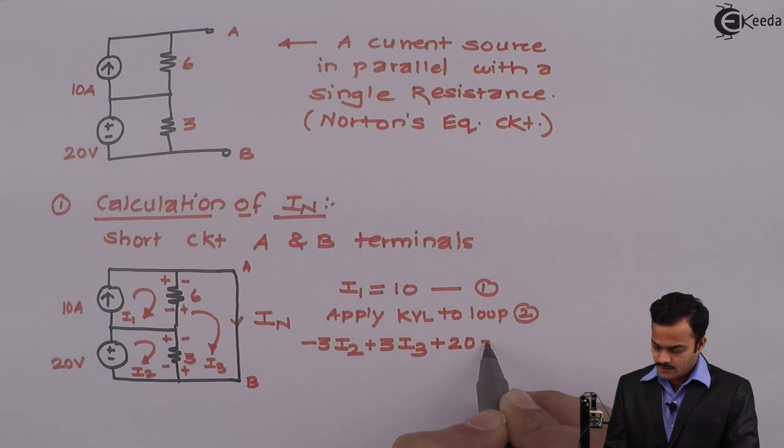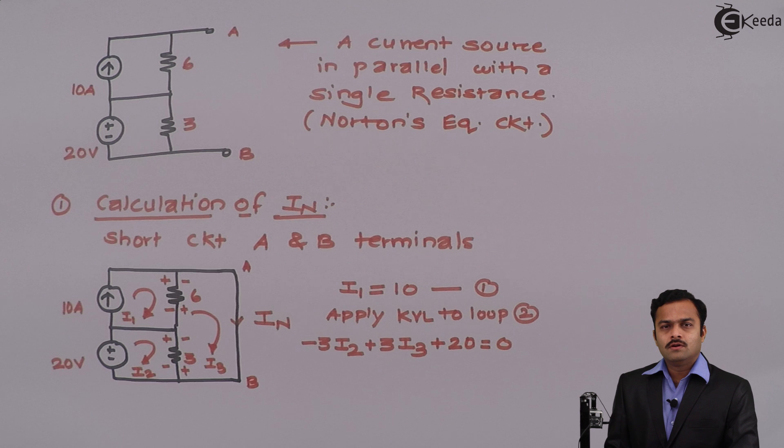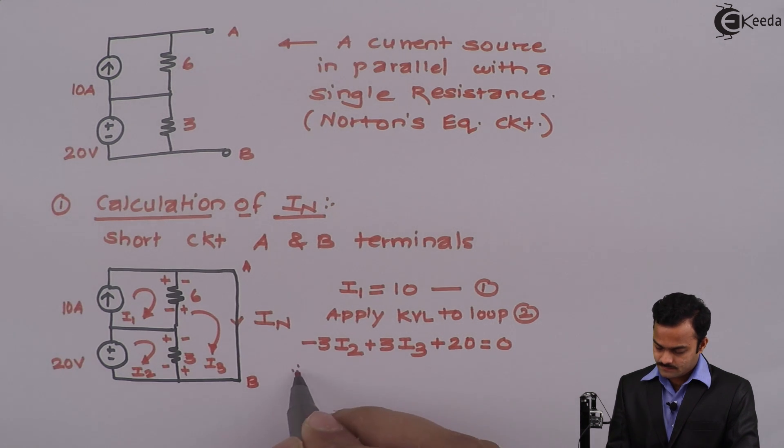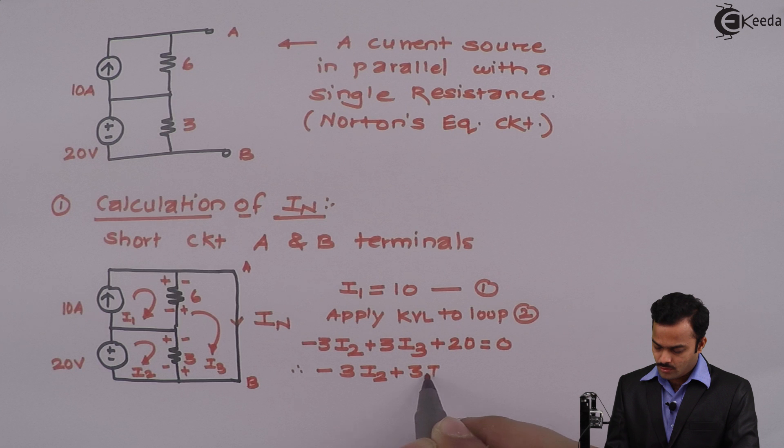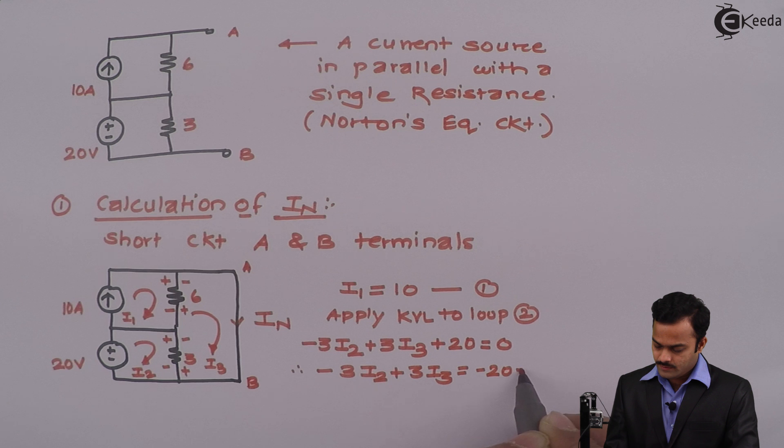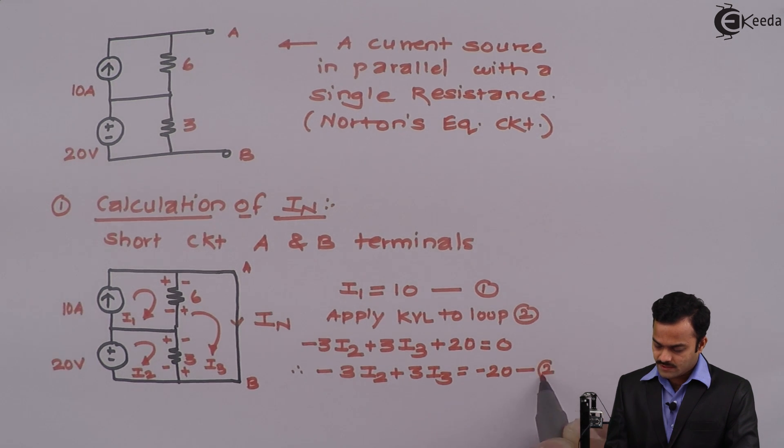And here to here minus plus a voltage source plus 20 equal to 0. Let's rearrange the terms so I will have minus 3 I2 plus 3 I3 on one side of the equation, and constant minus 20 I will take to other side. I will get equation number 2.